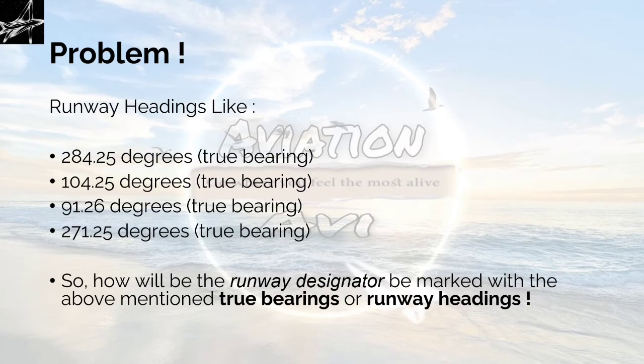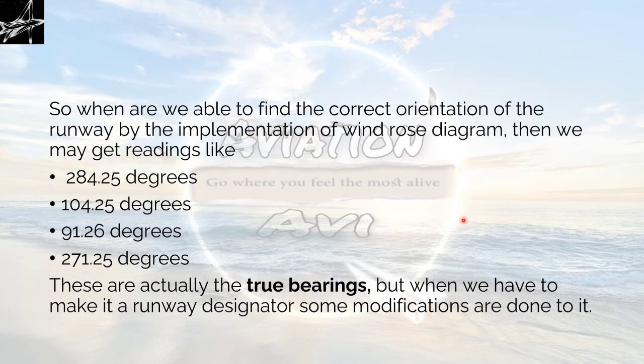When we are able to find the true bearings or the correct readings or the runway headings from the type 1 wind rose diagram and type 2 wind rose diagram, we are left with the very first question which I have asked. What if the readings are like 284.25 degrees, 104.25 degrees, 91.26 degrees, 271.25 degrees? When we are able to find the correct orientation of the runway by the implementation of the wind rose diagram, then we may get the readings as follows with the decimal points in them. These are actually the true bearings.